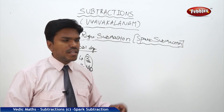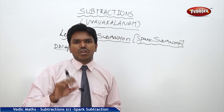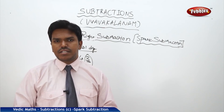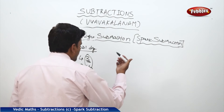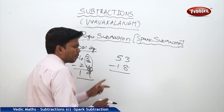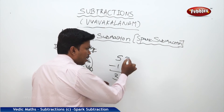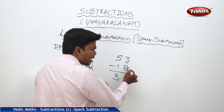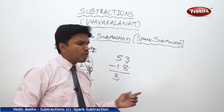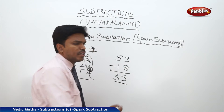Second important point: whenever dealing with mismatch numbers, bring the upper number and add to the below number's complement to get the answer. If match numbers, simply subtract directly. Example: 53 minus 18. What is 5 minus 1? That is 4. But next numbers are mismatched, so 4 becomes 3. Since mismatch, bring upper number 3 and add to complement of 8, which is 2. So 3 plus 2 equals 5. Answer is 35.